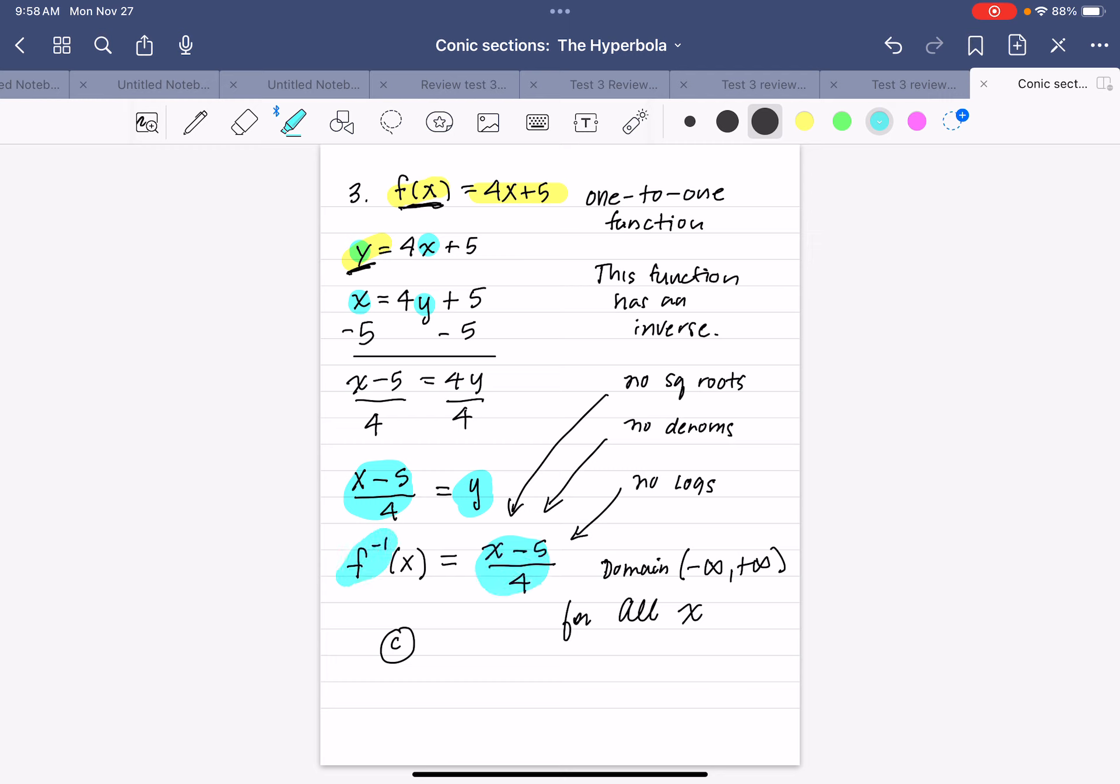Now they ask us, when is this inverse true? Well, it's true for all x because there's no restriction on what x can be because that denominator is not a variable, it's 4.